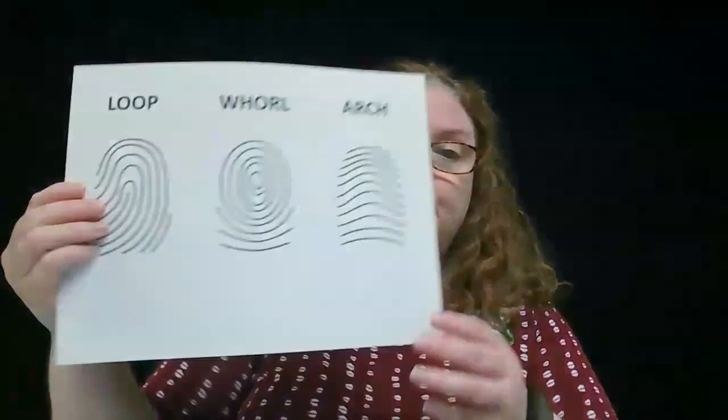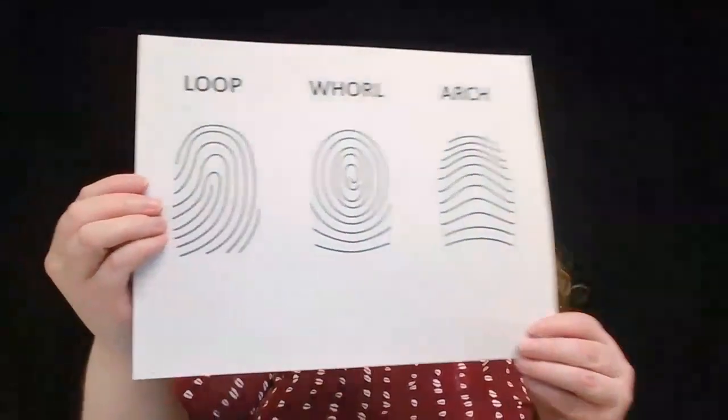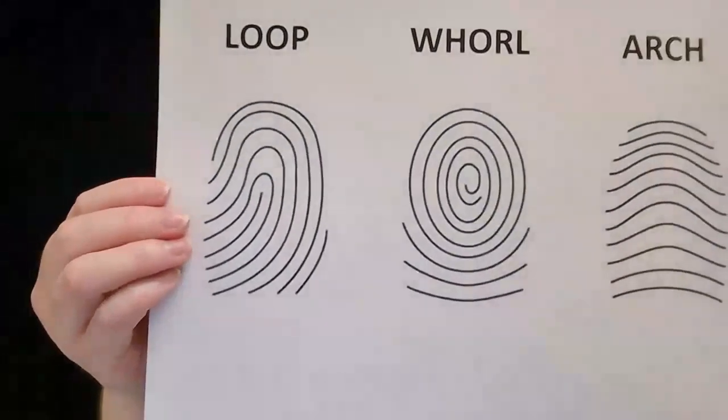Today we're going to talk about some of the ways this is done. Fingerprints are the most commonly collected type of evidence. Fingerprints are the impressions left by skin ridges on human fingers. These patterns often look like loops, whorls, or arches.